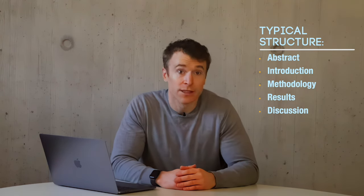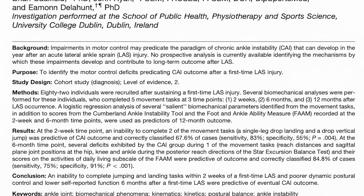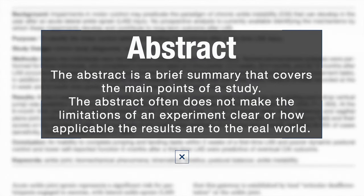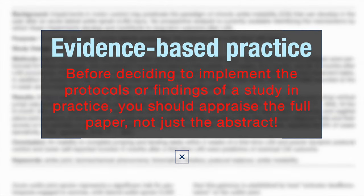After the title, you'll see that a paper is divided into sections. Those sections vary between papers, but they usually include an abstract, an introduction, a section on methods, results, and a discussion. The abstract is a brief summary that covers the main points of a study. Since there's a lot of information to pack into a couple hundred words, an abstract often does not make the limitations of an experiment clear, or how applicable the results are to the real world. Before deciding to implement any evidence in practice, make sure to read the whole paper. Basing your decision or argument on an abstract alone is not enough.